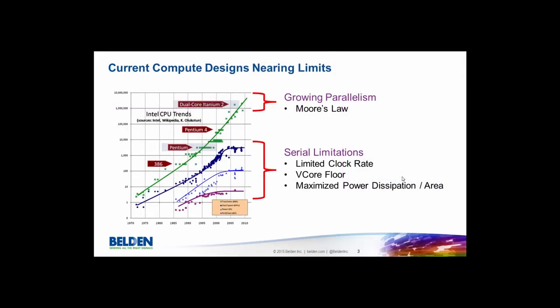One of the first things we need to understand is compute and what's happening in the compute world, especially when we talk about parallelism. We watch Moore's law moving along — we're following the Intel tick-tock roadmap and seeing more and more transistors going into a compute element, things like a CPU, GPU, FPGA, or ASIC. We can grow more and more parallel following Moore's law, but we hit some limitations a few years back, probably around 2003.